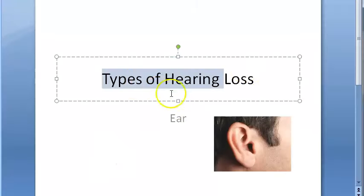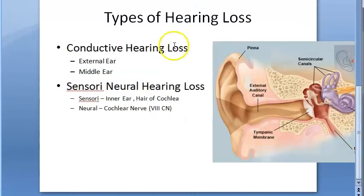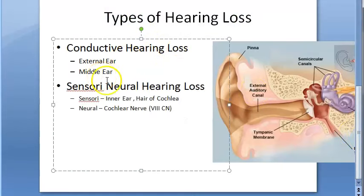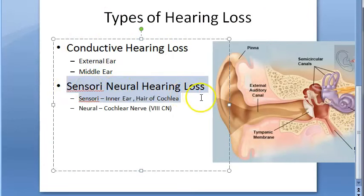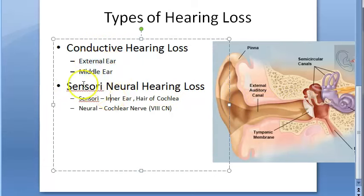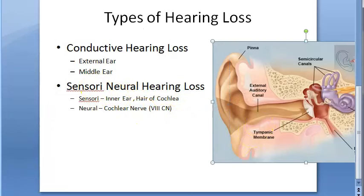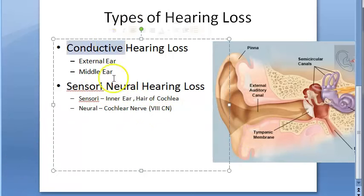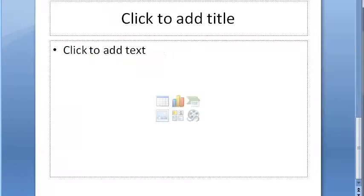In this video let us look at the types of hearing loss. There are mainly two types: conductive hearing loss and sensorineural hearing loss. Conductive hearing loss is anything concerned with the external ear or the middle ear. Sensorineural hearing loss is related to the inner ear and the nerve. So there are two types — conductive and sensorineural.